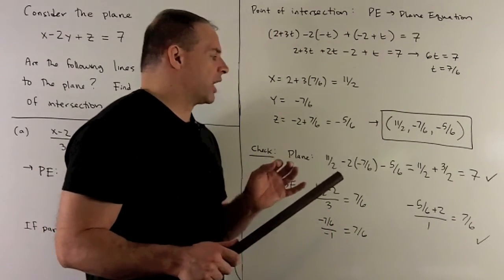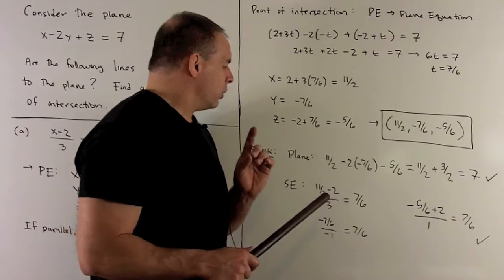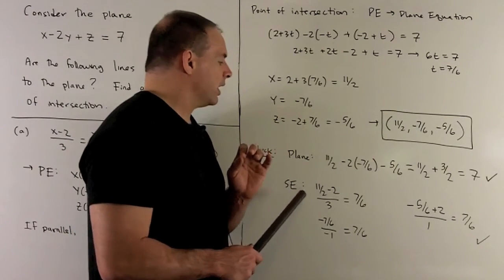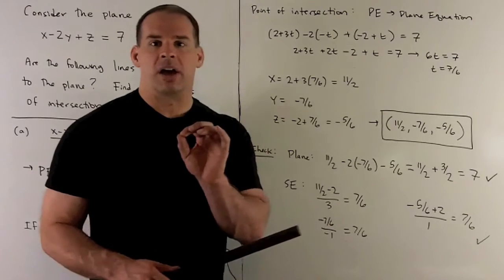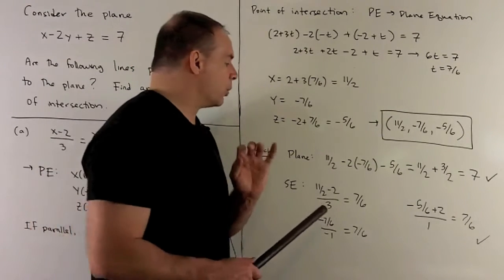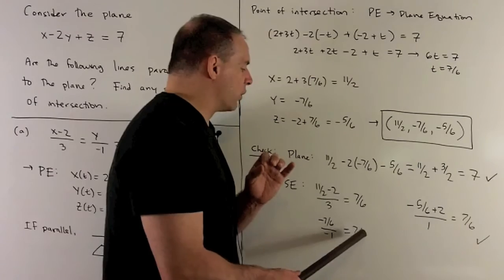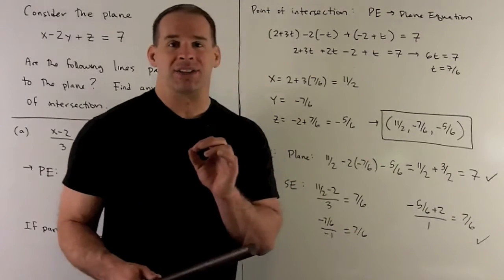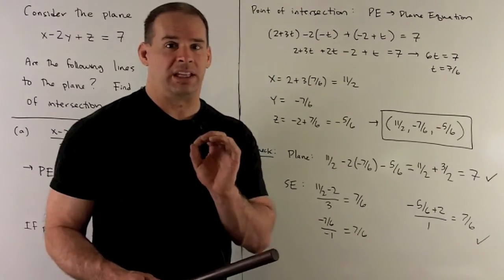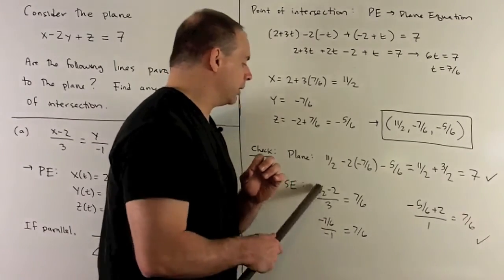We can also check the line by putting our point into the symmetric equations — the number that comes out for each term should be equal. When we do that, we always get 7 over 6, which is no surprise since that's how we got t — we let t equal each of those terms for the given point.